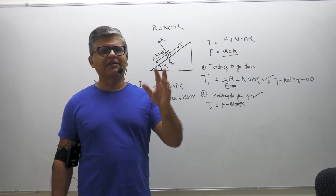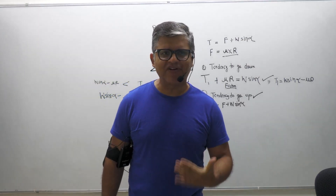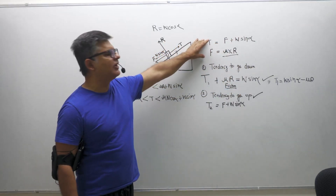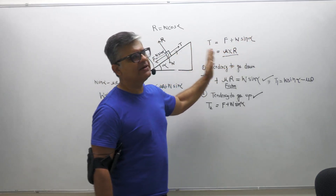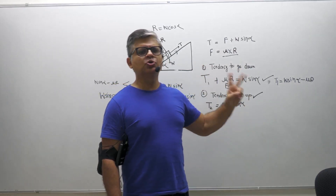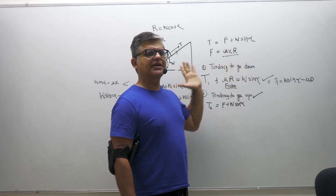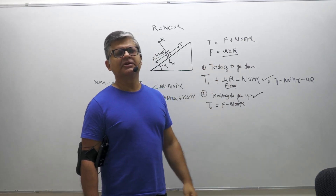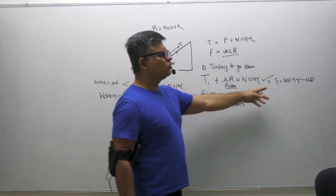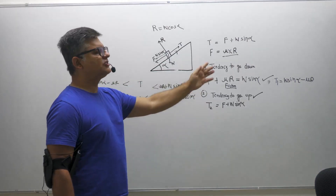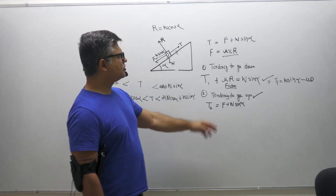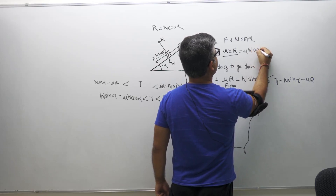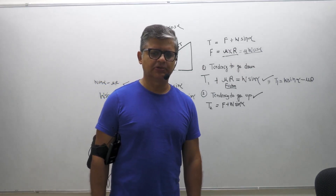To summarize: step one, write the equations of equilibrium along the x-axis and y-axis. Step two, take two scenarios — tendency to go down means friction is up; tendency to go up means friction is down. Calculate the value of tension for each case. Any tension between these two values gives equilibrium. Convert friction to μW cos α and the question is solved.